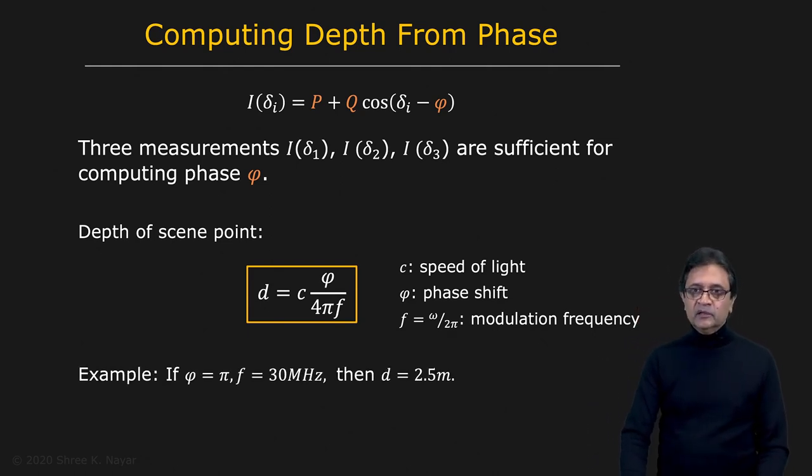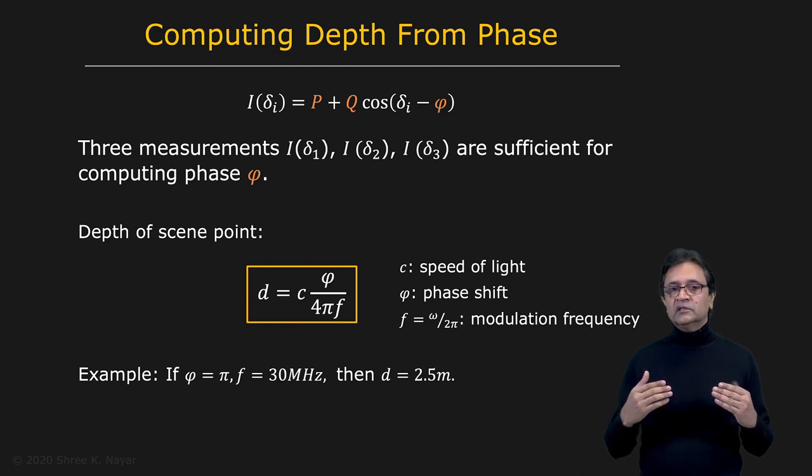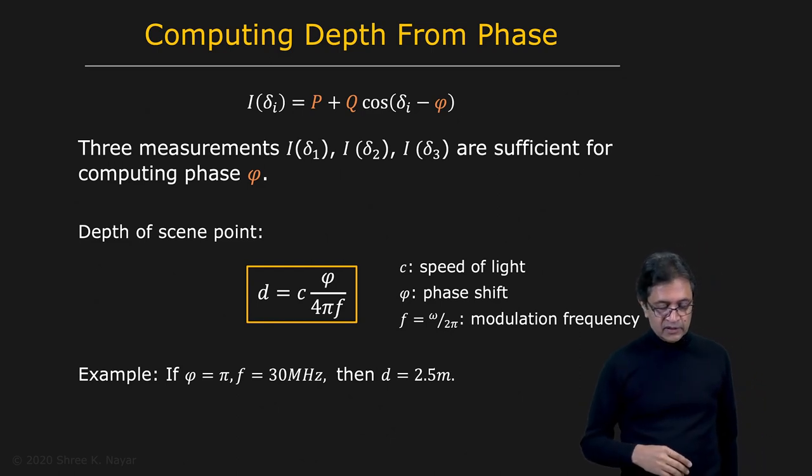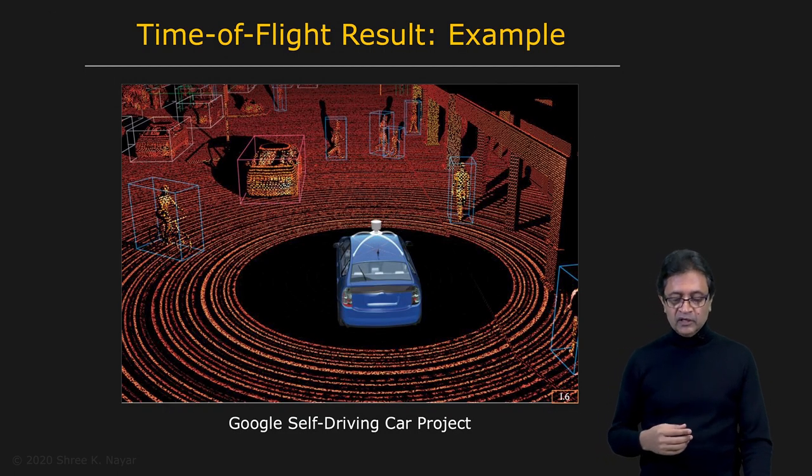As an example, if you have a phase difference of π and a modulation frequency of 30 megahertz, you get a distance of 2.5 meters. What's interesting is that this technique—the major advantage over other structured light techniques—is that you can measure things with great accuracy even if they're really far away from the sensor itself. Here's an example of the kind of information you recover. This is in the context of driverless cars. You have a car, and you get depth maps that look like this, which are extremely detailed with very high accuracy.